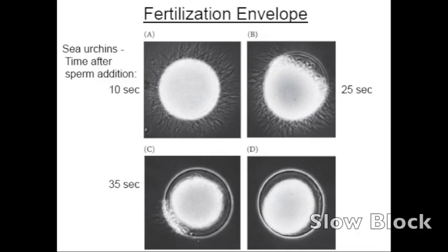The second action is called the slow block and is a chemical and physical barrier. Once a sperm has bound to the egg, cortical granules begin to fuse to the egg's membrane and release their contents into the space between the egg membrane and the vitelline layer. Essentially, the granule's contents begin to harden and form a protective layer around the egg called the fertilization envelope.